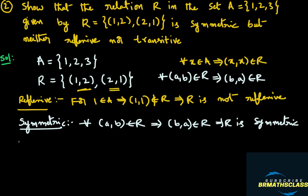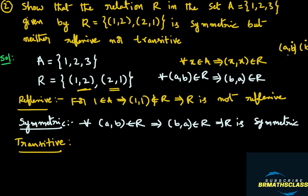Now we need to check the transitive property. How to check the transitive property? First of all, we should identify a pair of ordered pairs which are of the form (a,b) and (b,c) — that means the first one ends with b and the second one starts with b. You have to identify such ordered pairs in the relation first. Then we will check whether the ordered pair (a,c) is there in the relation or not.